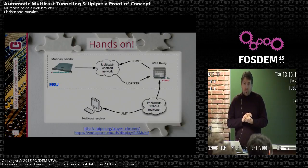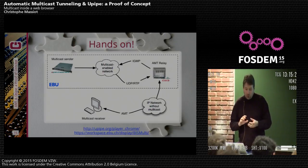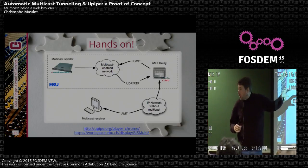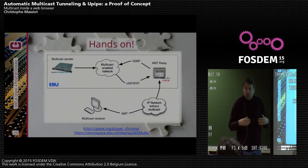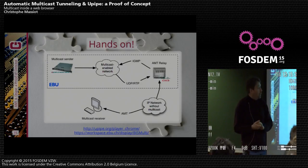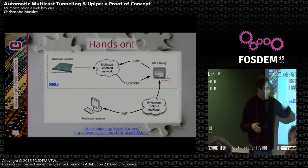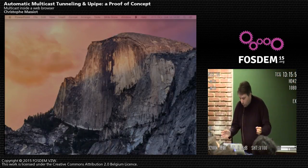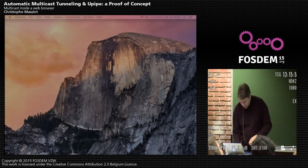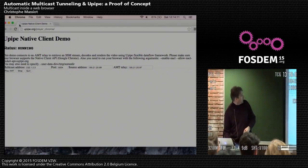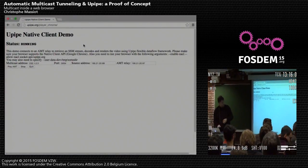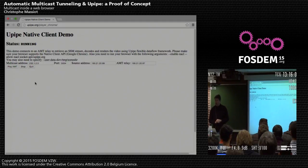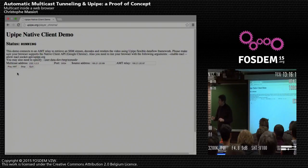Switching to the demonstration. At the EBU in Switzerland, there is a streamer that sends a multicast stream to their internal multicast-enabled network, and there is a Cisco relay acting as an AMT relay. Here my PC talks to the relay, asks for the multicast stream address, and displays it. So this is a page running from the upipe.org website — you can go there and it's public, though it's limited to about three or four clients at once.